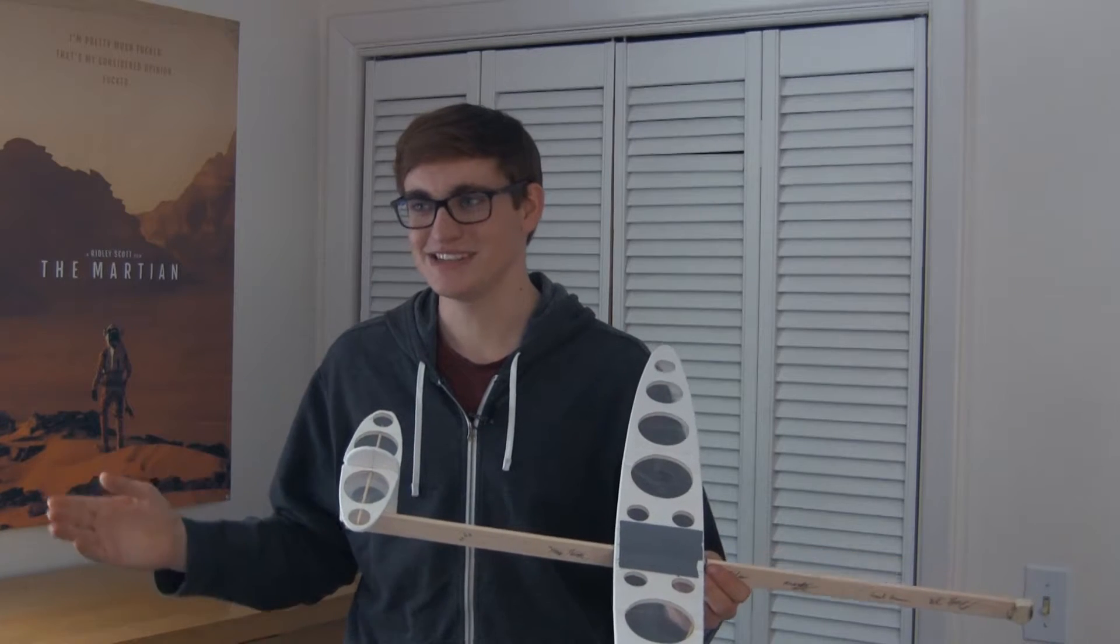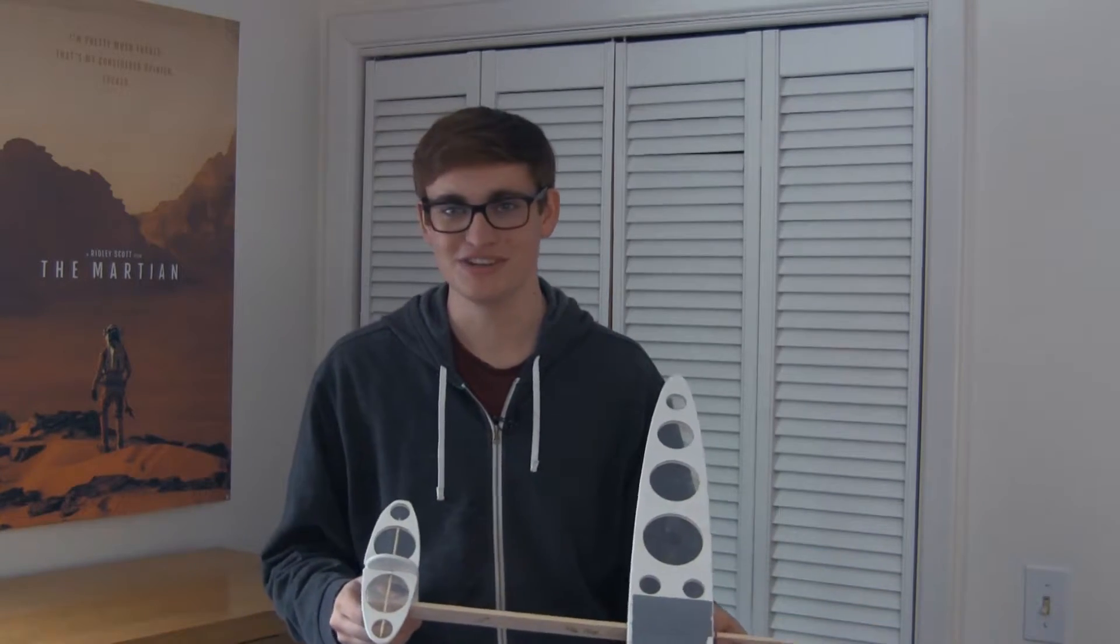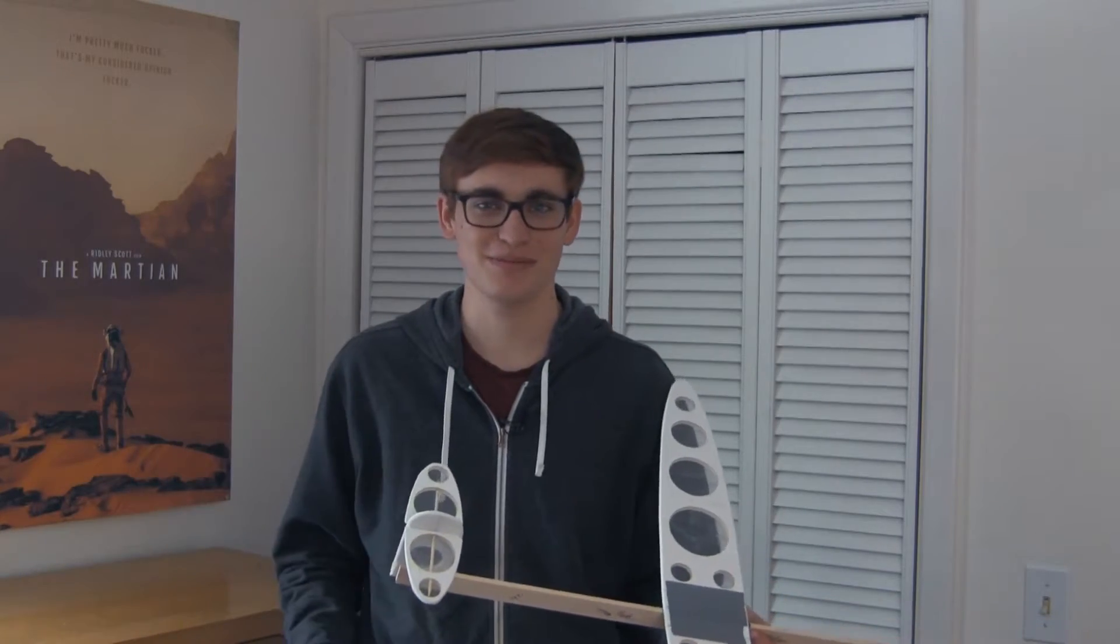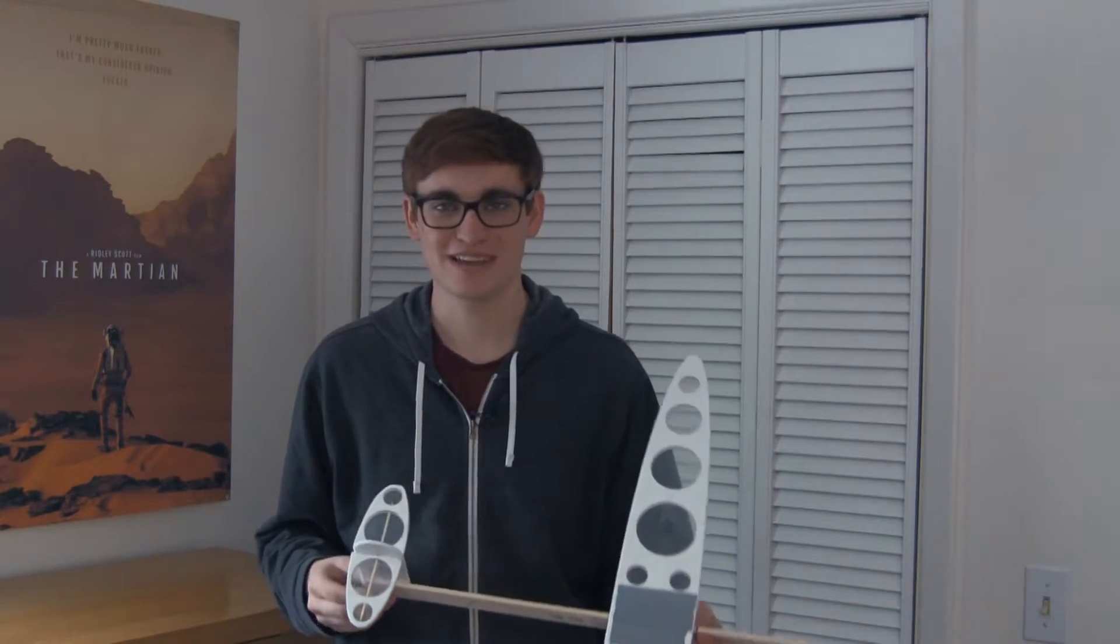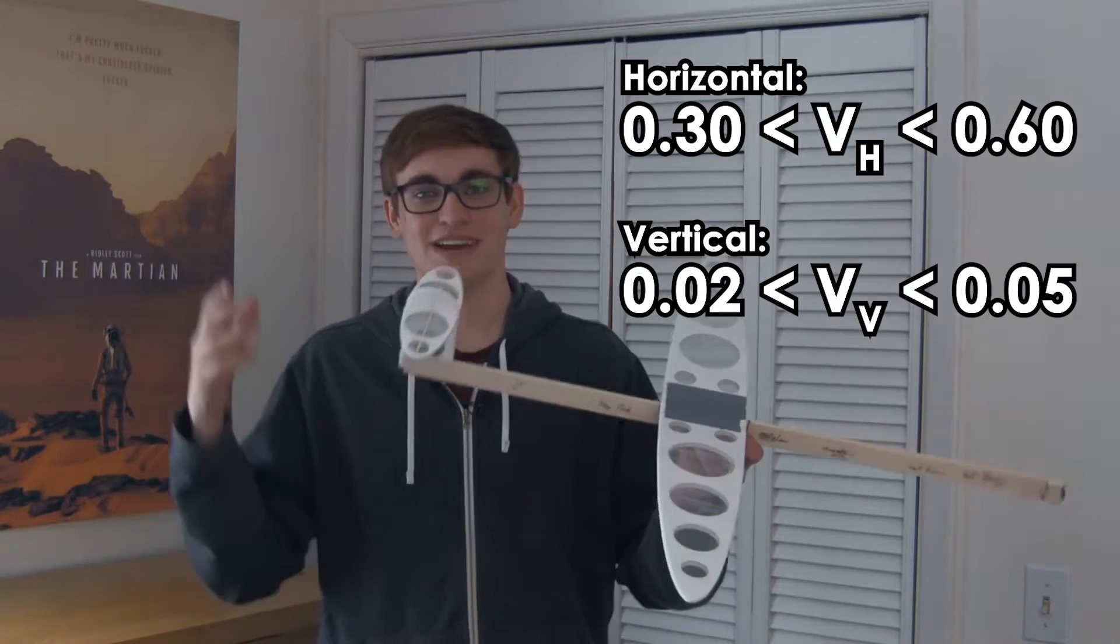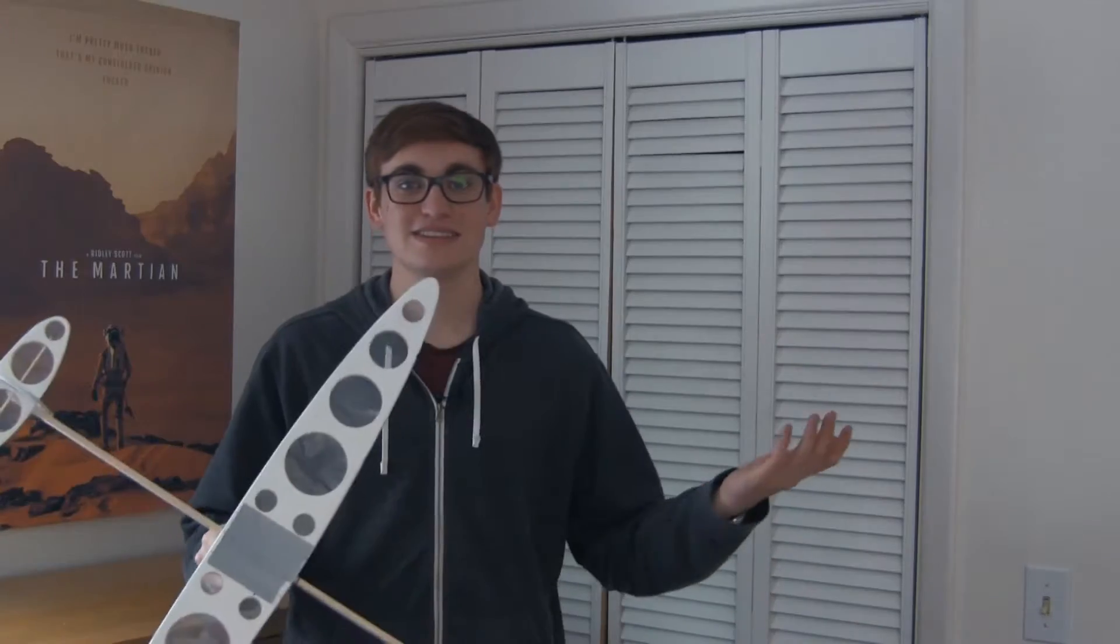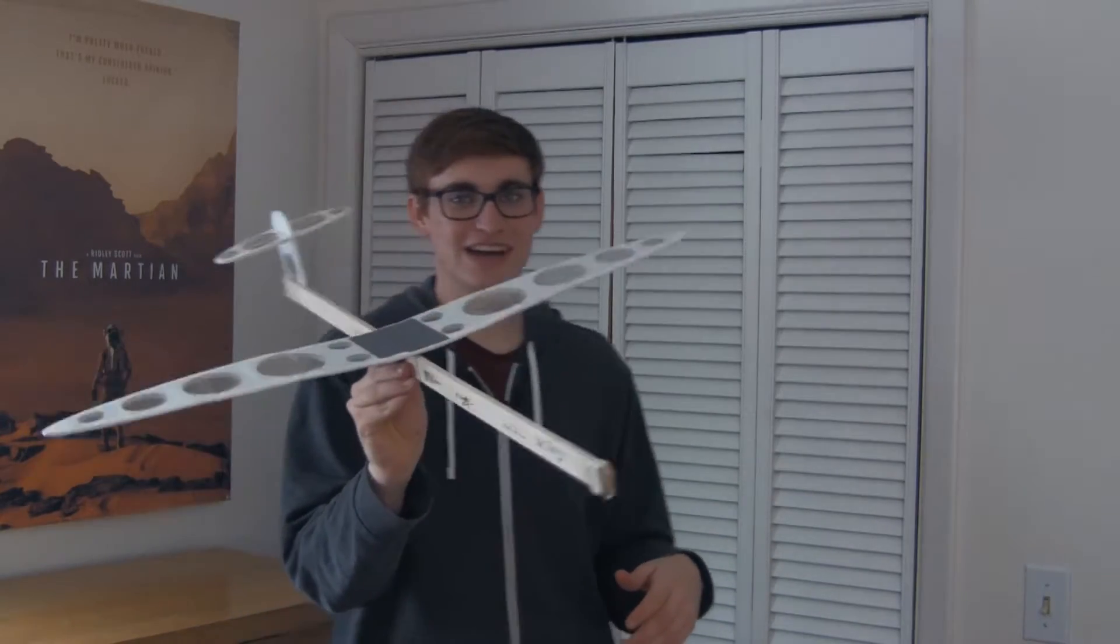Now, this equation doesn't immediately spit out a tail size you need. You actually have to assume your volume coefficient, which we did by looking at normal airplanes and seeing about where they landed. It was about in this range. I don't remember it off the top of my head. But by assuming those numbers, we found the area we need for a tail. And this area was supposed to give us our yaw stability.